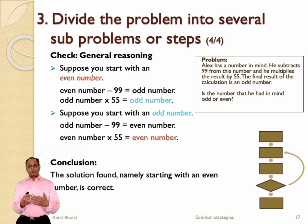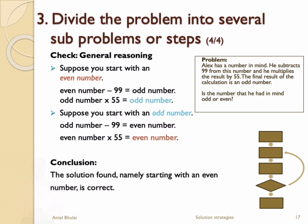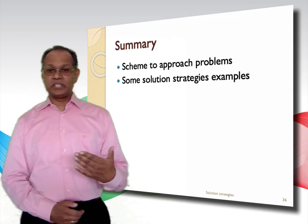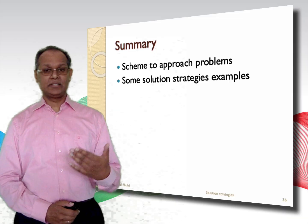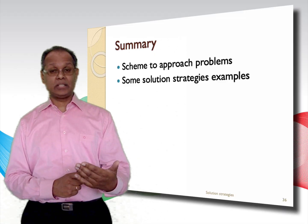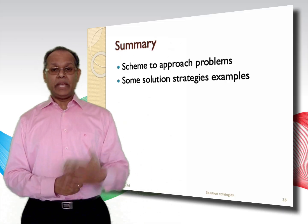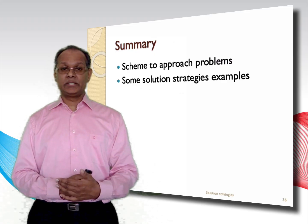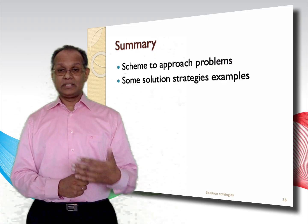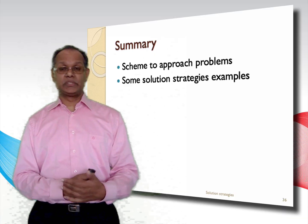In the next video we will prove mathematically that an odd number times an odd number results in an odd number, and that an even number minus an odd number results in an odd number. To wrap it up, in this part of the series we have discussed the scheme to approach a problem and applied the solution strategies: guess and check, go through all the possibilities, and divide the problem into sub-problems. In the second part we will discuss the use of formulas, discover a structure, make a model, and the brute force and divide and conquer solution strategies.